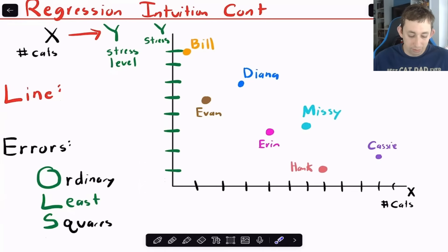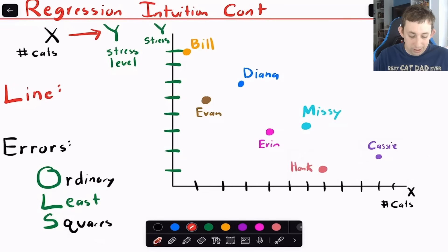Well, from these numbers, if we assume that we've got a linear relationship between Y and X, then what we're going to have is we can draw a line that relates the number of cats to your stress level based on these points. And if I were to draw this line, if I had to draw one line, I might draw a line something like this. And you can see based on this line that we don't go through any of these points. But we're sort of in between the line of Bill, Diana, Missy and Cassie and the line of Evan, Aaron and Hank, we're sort of splitting the difference between all of those points to get this line here. And I'll talk exactly about why we draw the line this way in a second. But for now, this is called an ordinary least squares line.